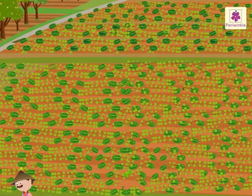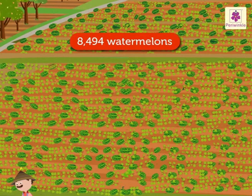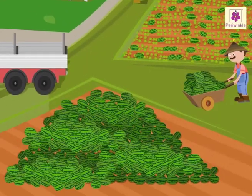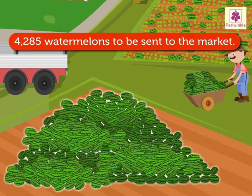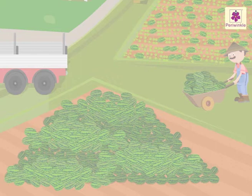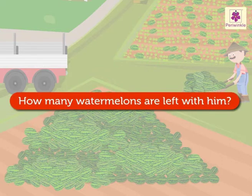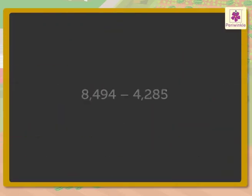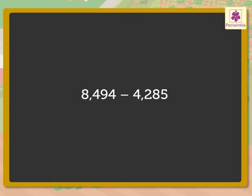Look! There are eight thousand four hundred ninety-four watermelons on the farm. The farmer is sending four thousand two hundred eighty-five watermelons to the market. So, let us find out how many watermelons are left with him. Here, we subtract four thousand two hundred eighty-five from eight thousand four hundred ninety-four to find the number of watermelons left with the farmer.